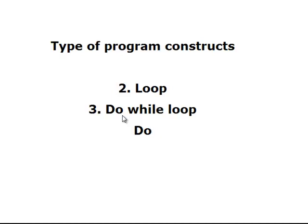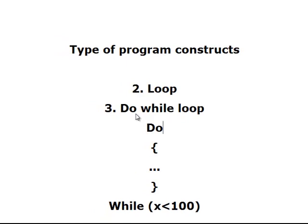We open a block, and we're going to write some code, and then we're going to close the block, and then we're going to say while x is less than 100. So, the difference between this and the while loop, is in this case, it will execute this block, here, at least once.